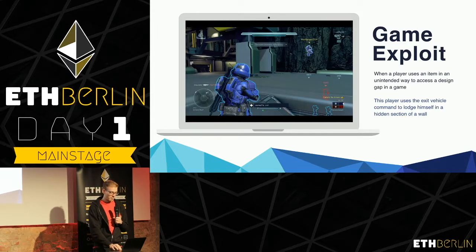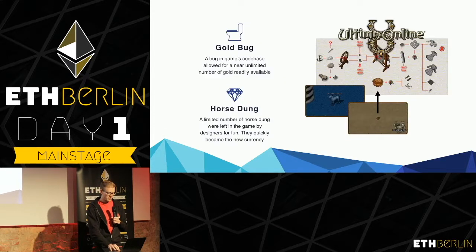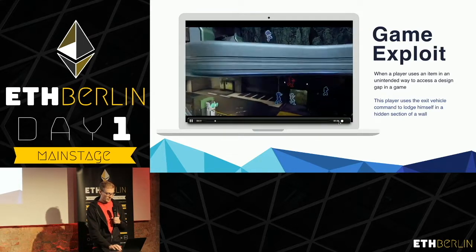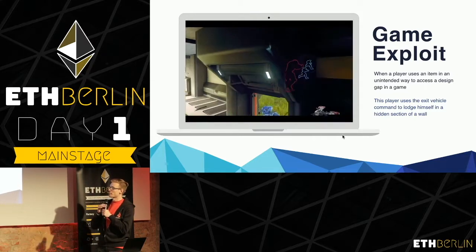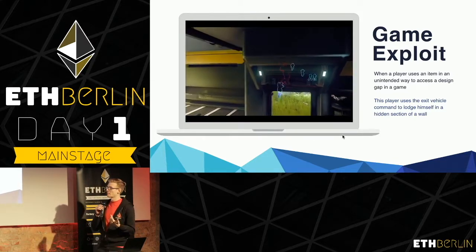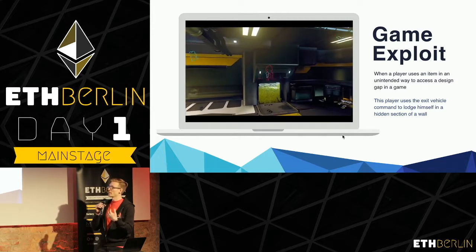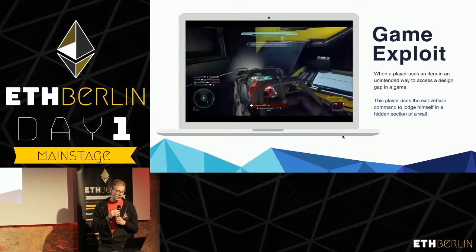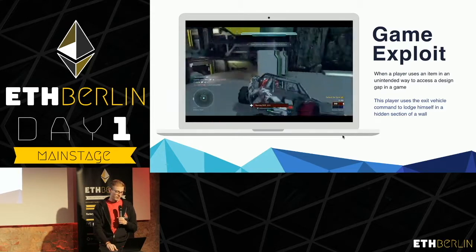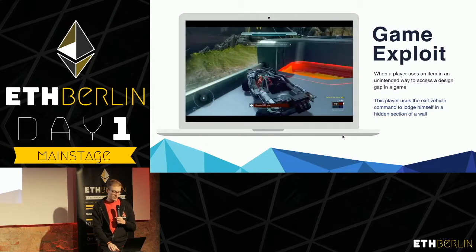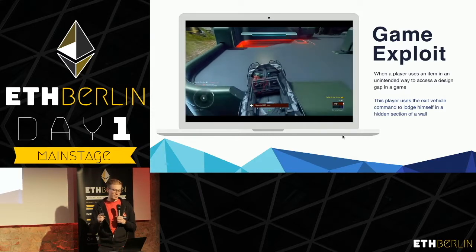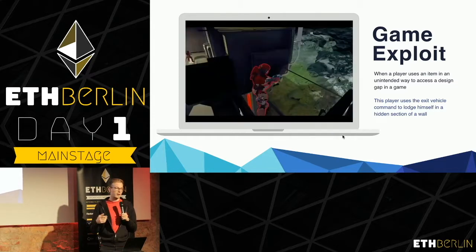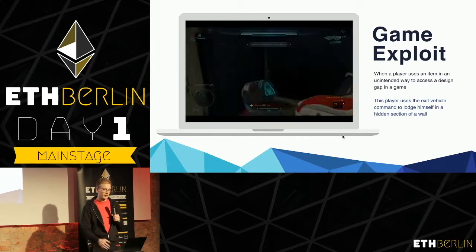An example of a game exploit is this one in Halo, where a player has figured out a way to lodge themselves inside a wall where no other player can reach them, so they're able to snipe other players without being reachable. They achieved this by figuring out a way to drive a vehicle up into a particular spot, and once the vehicle is in that spot, they use the vehicle's exit vehicle command to lodge themselves into the wall — using an item in a way it wasn't supposed to be used due to an exploit in the game.